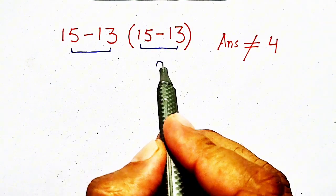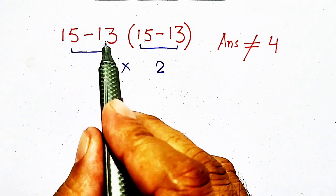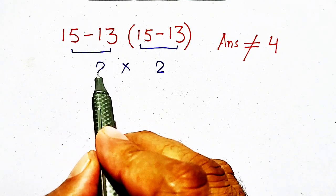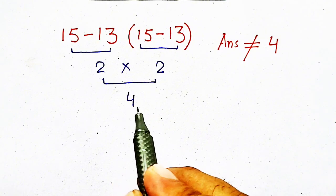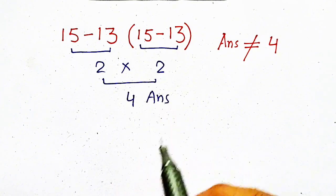15 minus 13 will be equal to 2 times 15 minus 13 will be equal to 2. So, 2 times 2 will be equal to 4, and 4 will be our answer.